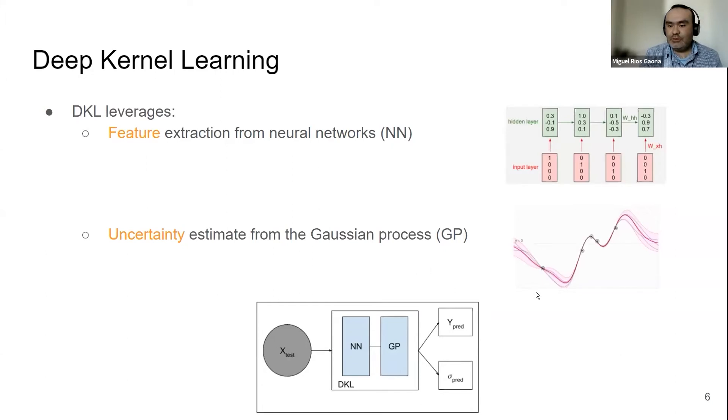Here in this case, the Gaussian process that we are looking at is the output and the dots are the observations. The red line is the prediction.